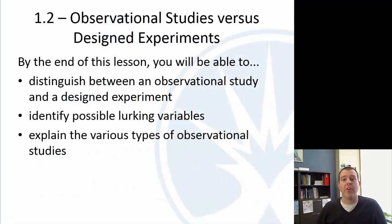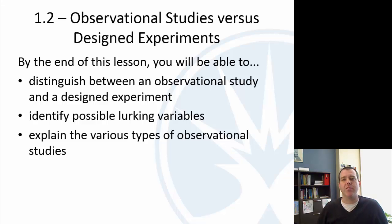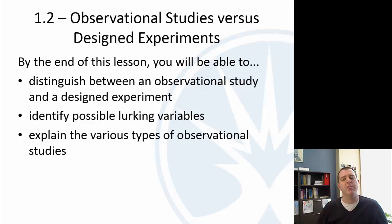Hi, this is Professor Dan Kerner. This is another video with our Math 120 statistics class. In this section we're going to talk about section 1.2 following our textbook, which is about observational studies and designed experiments. We're going to try to distinguish between those two, talk about something called lurking variables, and then talk about different types of observational studies.